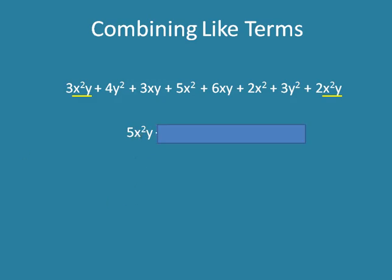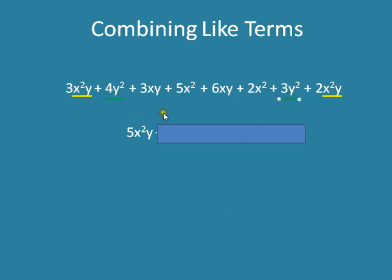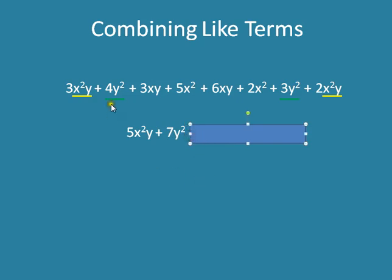Next I'm going to look at which term comes next, and it's a y squared. So I'm going to go through and look for another number that has a y squared after it — there it is, 3y squared. So 4y squared plus 3y squared — I add the coefficients together — and that's 7y squared.